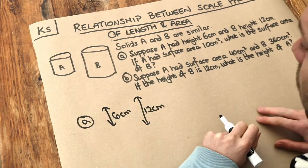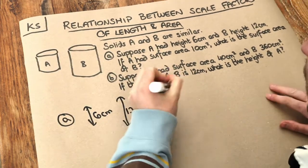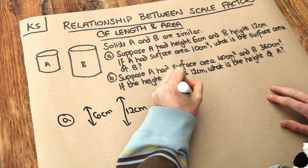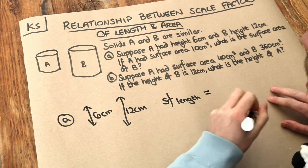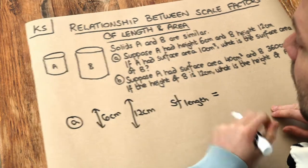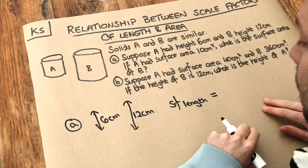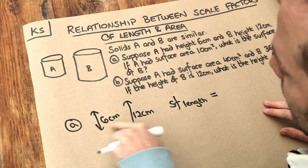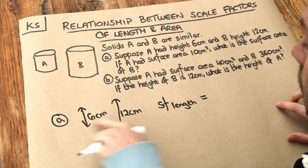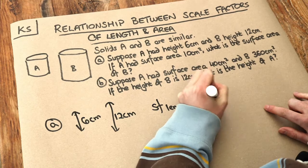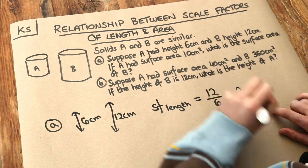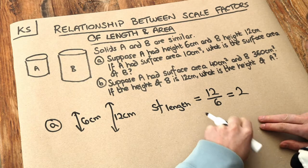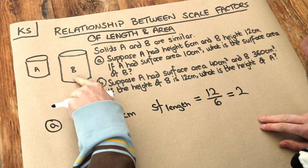Let's work out what the scale factor of length is. I'm going to write SF length to mean the scale factor of length — that just means how many times bigger the lengths are becoming from this solid to this solid. So going from 6 to 12, we can see it's getting twice as big. We could just divide the two numbers: 12 divided by 6 gives you 2. So all the lengths — the width, the height etc. — are becoming twice as big going from A to B.